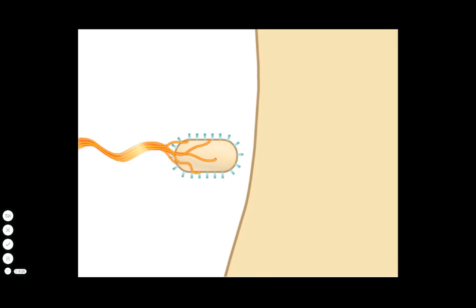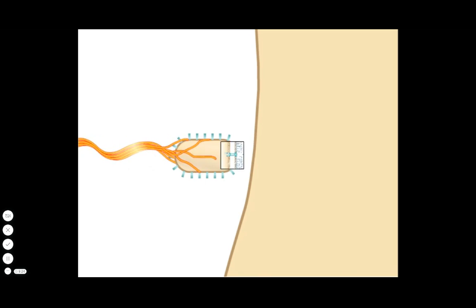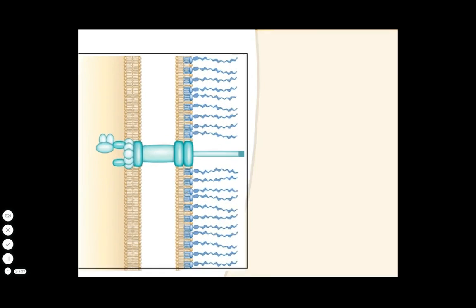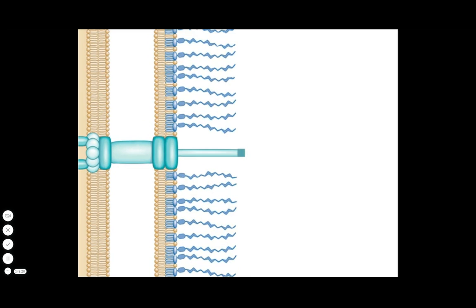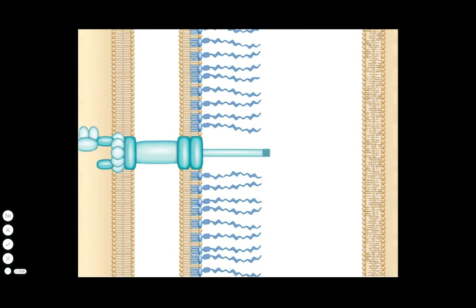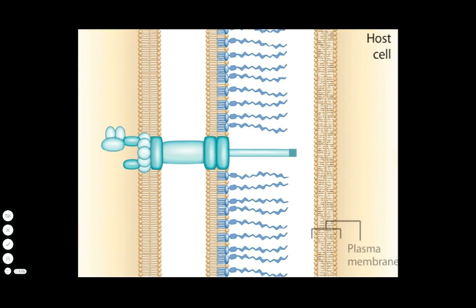The type III secretion system includes a variety of proteins arranged into a microscopic needle. The base of the needle complex spans the inner and outer membranes of the bacterium. The thin needle projecting away from the cell is made up of multiple subunits of a single protein. The tip of the needle must make contact with a host cell to initiate secretion.